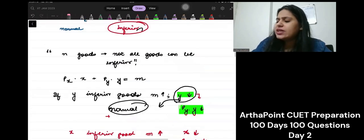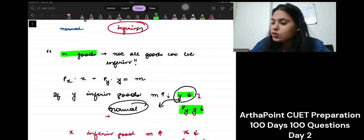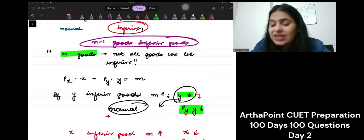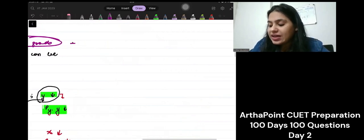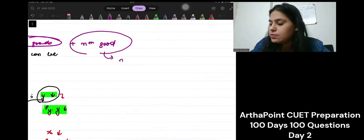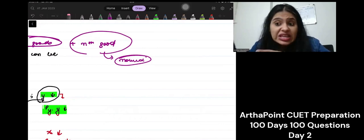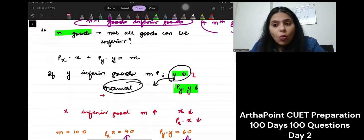In this case, we can say that maximum N minus 1 goods can be inferior goods. But that Nth good will be a normal good. You will increase the amount so that you can spend your entire income. Where will you spend the increased income? You must spend it on X.